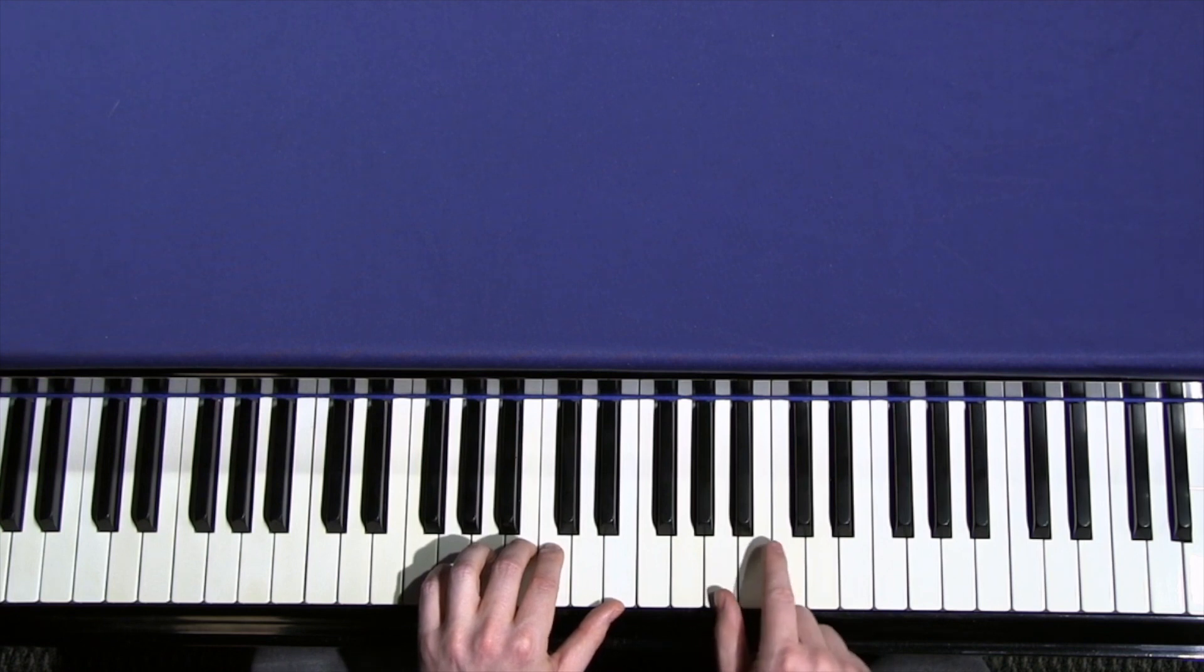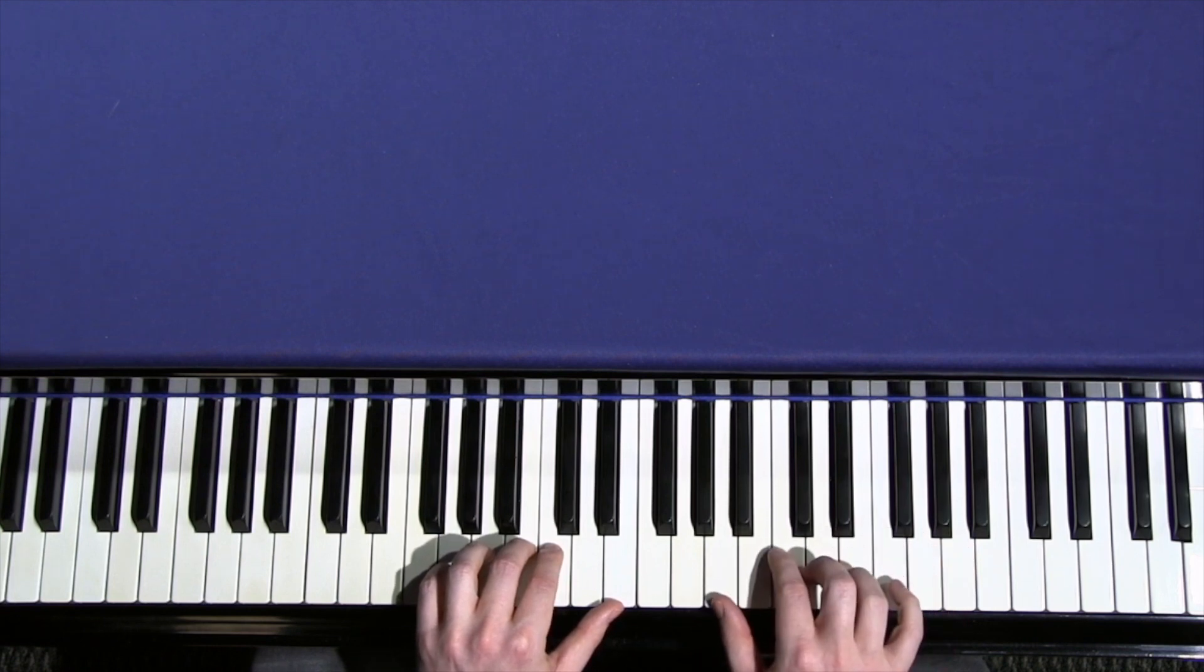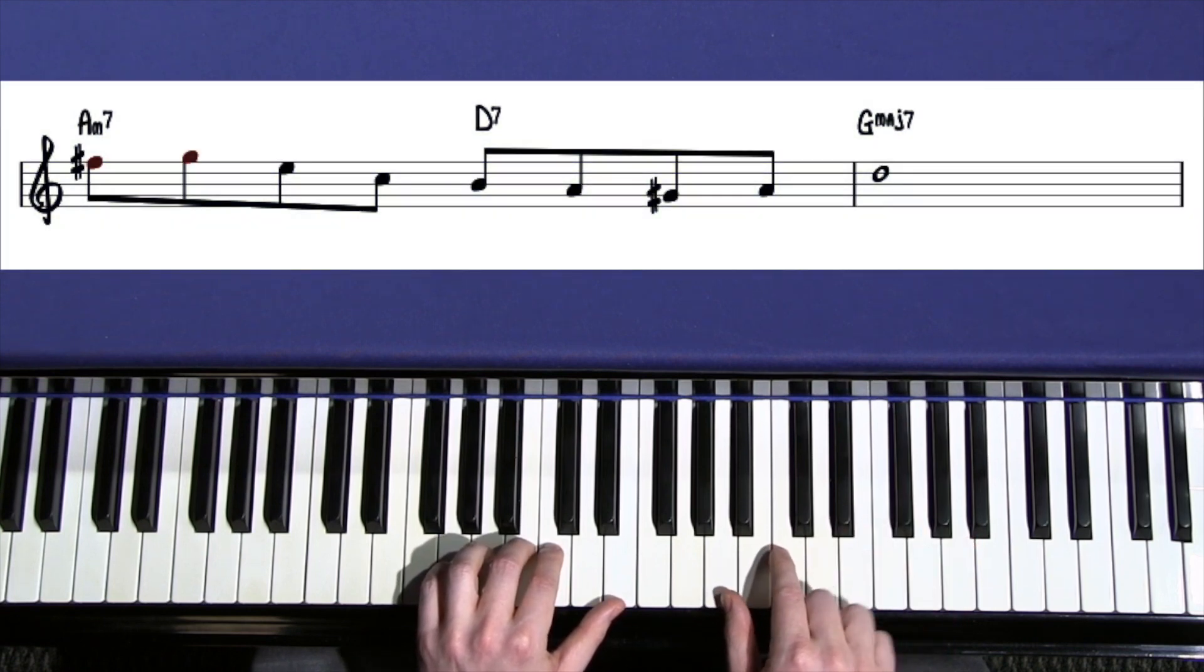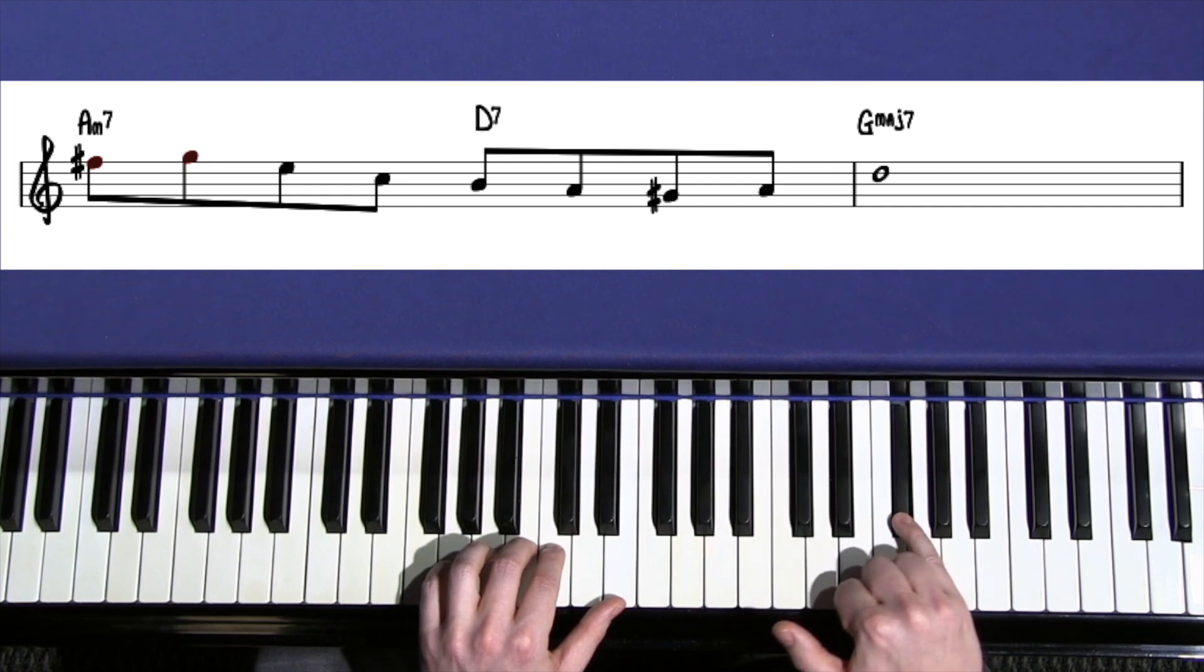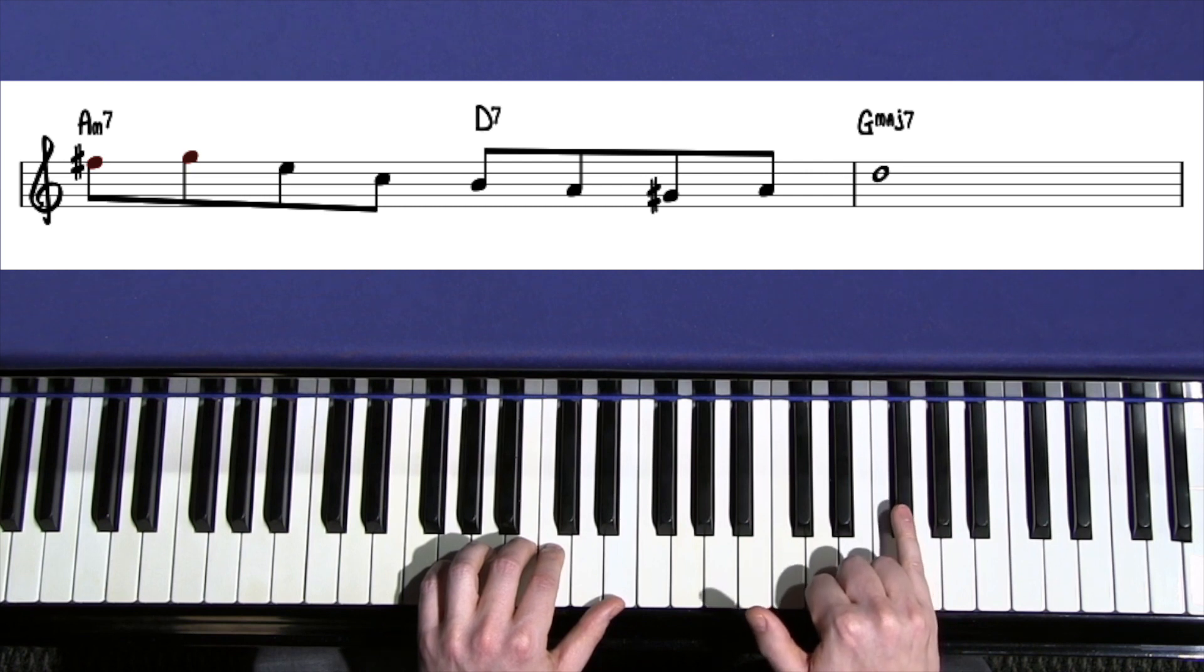Now the lick in the right hand is going to start on the six, so you can find that quickly and easily by thinking about what an A minor triad would be, noticing that the top note will be the five, and then we're up a whole step and we've got the six right there. We can also think a minor third down from the root.